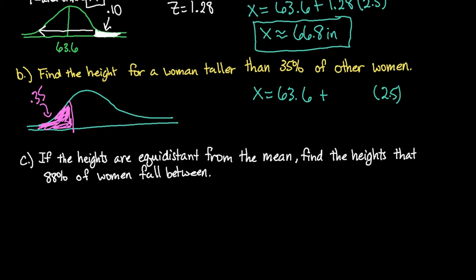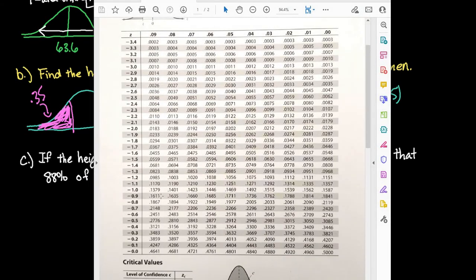So again what we would do is grab our table. 0.35 is less than 0.5 so we know we're going to have a negative z-score because it's less than 50 percent. And so if I come through in here I see that 0.35 is in between 0.3483 and 0.3520. It's slightly closer to this one because 0.35 is 0.0017 from here but 0.002 from here, so it's slightly closer to this one so we're going to use negative 0.39 as our z-score.